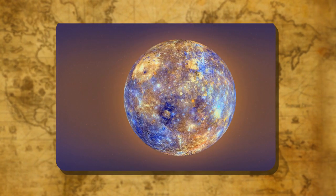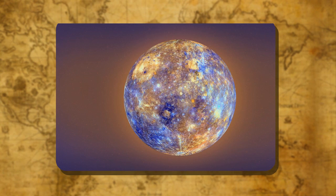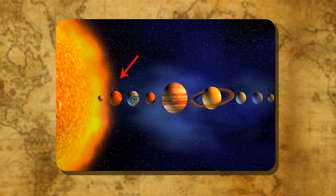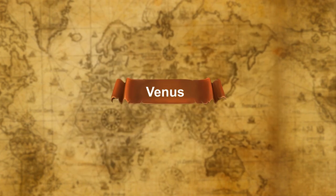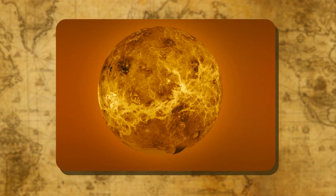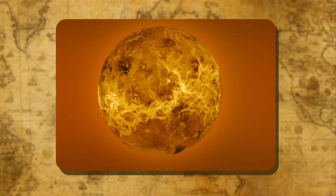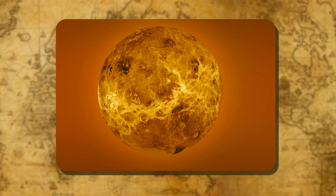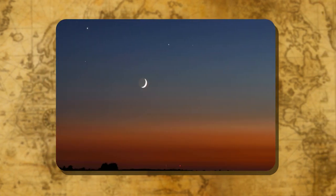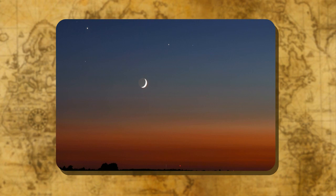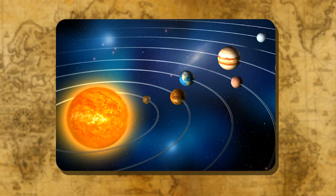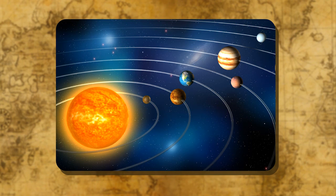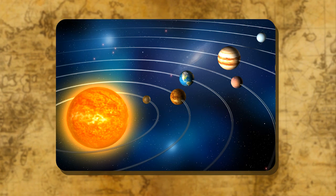Mercury: It is the smallest planet and the closest to the sun. It takes only about 88 days to complete one round along its orbit. Venus: Venus is the brightest planet and visible in the sky at sunrise and sunset, hence it is referred to as the morning and the evening star.